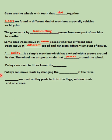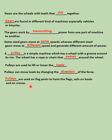A pulley is a simple machine which has a wheel with a groove around its rim. The wheel has a rope or chain that passes around it. Pulleys are used to lift or lower loads. Pulleys can move loads by changing the direction of the force — it is easier to pull down than to push up. Pulleys are used in flag posts to hoist flags, in sails of boats, and in cranes.